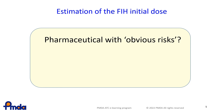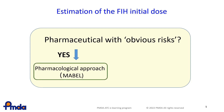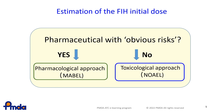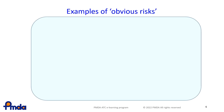First, the pharmaceutical agent is investigated for any obvious risk. If the drug has any obvious risks, pharmacological approaches are used for determination of the initial dose. In case of low risk, toxicological approaches are used. This slide specifically shows obvious risks of a pharmaceutical agent.